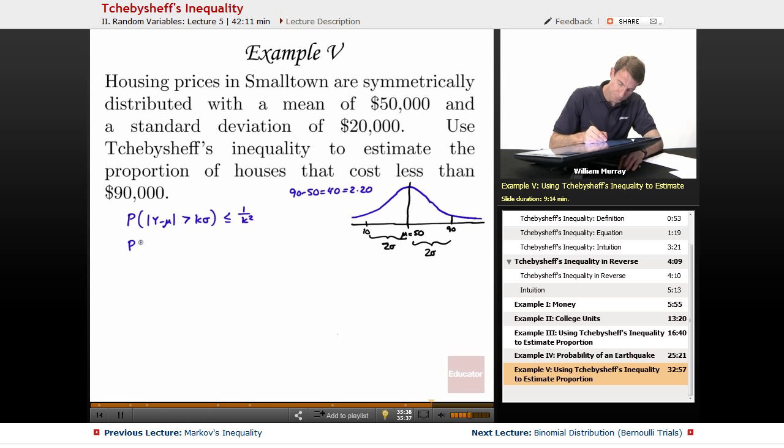So the probability that y minus 50, the mean here, is greater than or equal to, we already said k was 2. Sigma is the standard deviation, 2 times 20, so that would be 40. According to Chebyshev's inequality, that's less than 1 over k squared, 1 over 2 squared, which is 1 fourth.